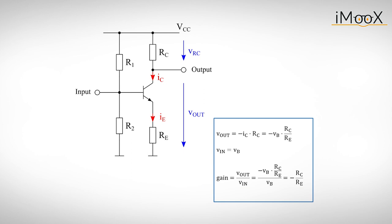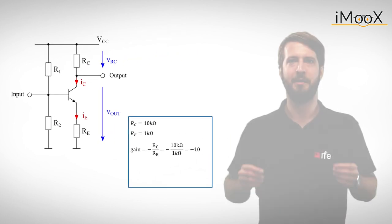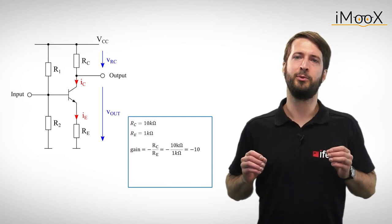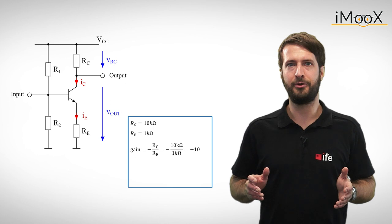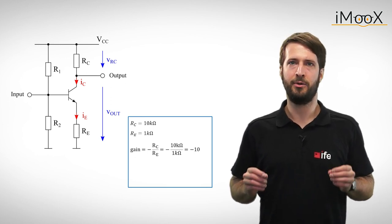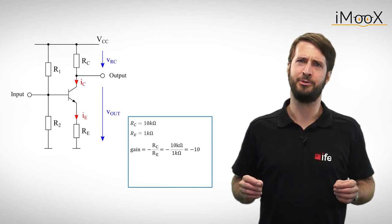We can simply define any gain only by adjusting the values of the two resistors RE and RC. If we use for instance 10k for RC and 1k for RE, we get a gain of minus 10. But wait! That does seem a little bit too easy. What if we would make RE zero ohms? According to our calculation, the gain of the circuit would become minus infinity. That can't be right.